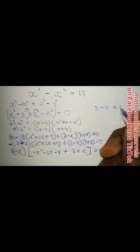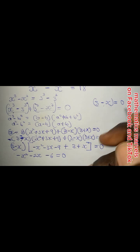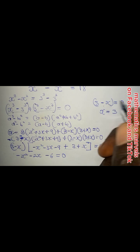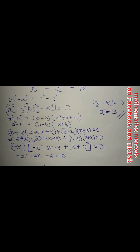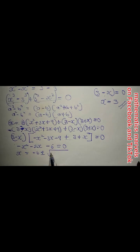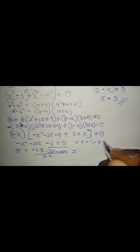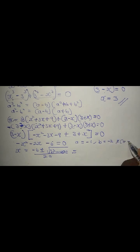So we have (x minus 3) times (minus x squared minus 3x minus 9 plus 3 plus x) equals zero. Collecting like terms gives minus x squared minus 2x minus 6 equals zero. The first value of x is equal to 3. Now looking for the two remaining values of x using the quadratic formula: x equals minus b plus or minus root of b squared minus 4ac over 2a. In this question, a is equal to minus 1, b is equal to minus 2, and c is equal to minus 6.